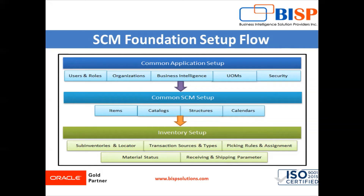The next area is the common Supply Chain Management setups. These are specific SCM setups such as items — the things we are going to buy, build, or sell to our customers. Next is the catalog or category, which helps us manage data and group things together. The product structure is similar to the bill of materials if you are a manufacturing person. Then you have your calendar — when we are going to be open, when we are going to be receiving things, when we are going to be shipping things.